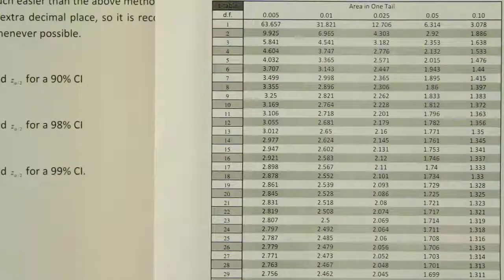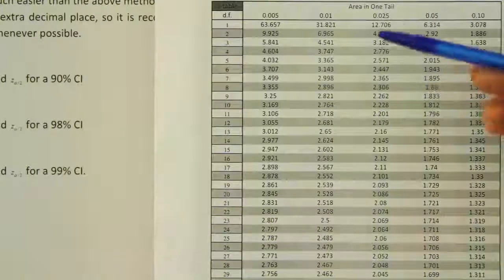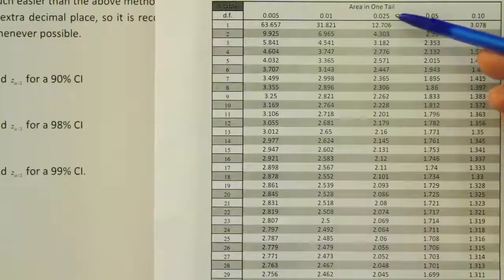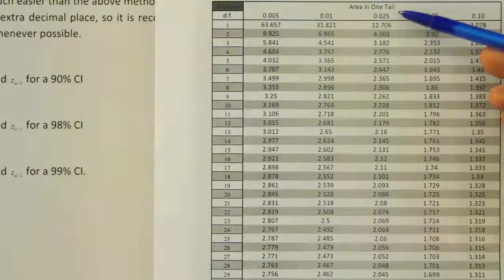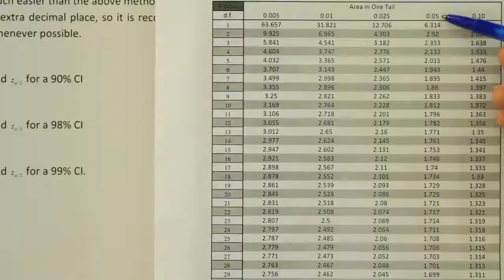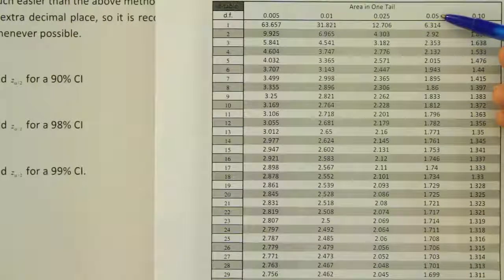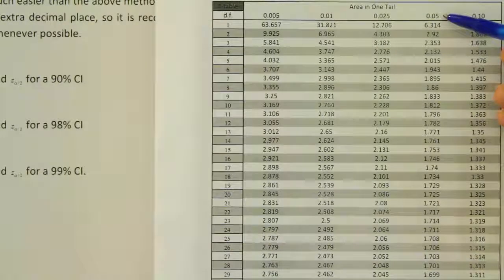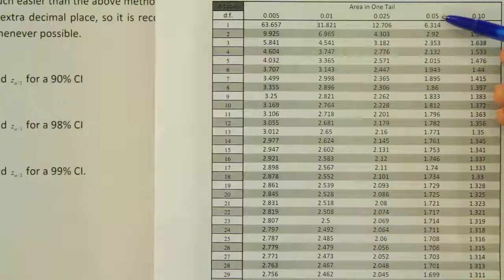Okay, so here we are at our t-table, nice and zoomed in. And we can see that there's a little heading here that says area in one tail. That's our alpha divided by 2 value that we just found. So it turns out that in our example, the first one here, it was 0.05. So we're in this column. And all we have to do is go straight to the bottom of that column and find the number at the very end.